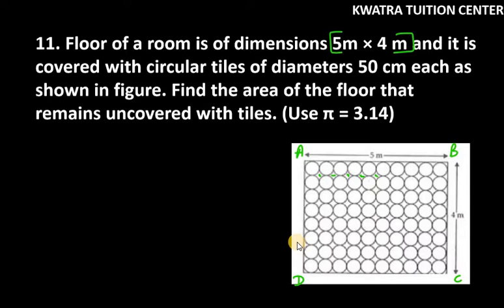Then, we have to remove area of these tiles. And first of all, we need to count how many tiles do we have. If I count lengthwise first, then 1 through 10. 10 is in 1. And widthwise, if we see, then 1 through 8. So, 8 into 10 is 80. We have 80 tiles in total.